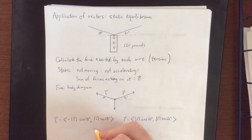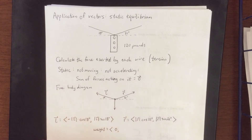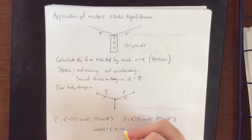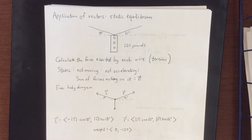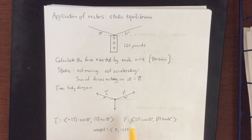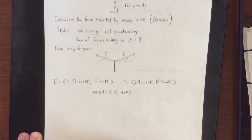Finally, the weight vector points only in the vertical direction, so the horizontal component is zero, and the vertical component is negative 120 pounds (negative because it points downward). Since the sum of the forces must equal the zero vector, every corresponding component must add up to zero.